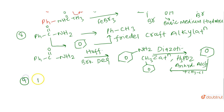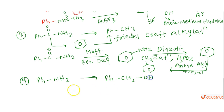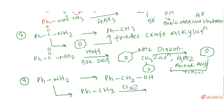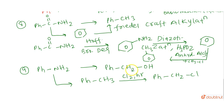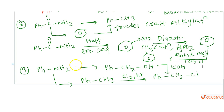The next question is to convert aniline to benzyl alcohol. First, convert aniline to toluene (as done in the previous question using H3PO2). Then chlorination using Cl2 in the presence of UV light converts toluene into Ph-CH2Cl (benzyl chloride). Finally, treating with KOH converts it into benzyl alcohol.